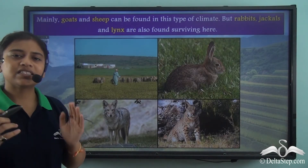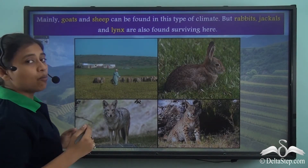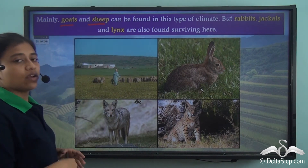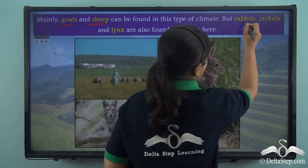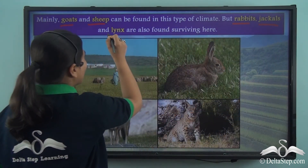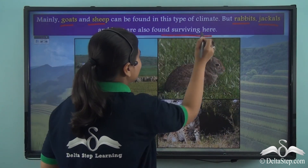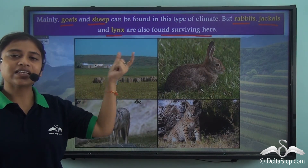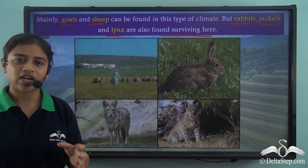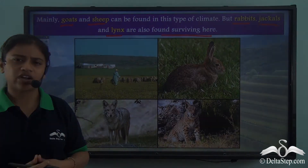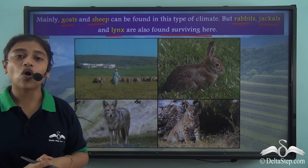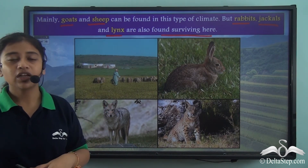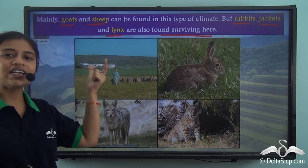In the Mediterranean region, we mostly find goats and sheep, while other animals like rabbits, jackals, and lynx are also found here. These animals are highly dependent on grasses, and since vast stretches of grass are more characteristic of the steppes, the Mediterranean region predominantly supports goats and sheep.